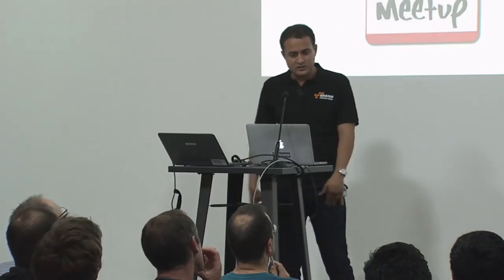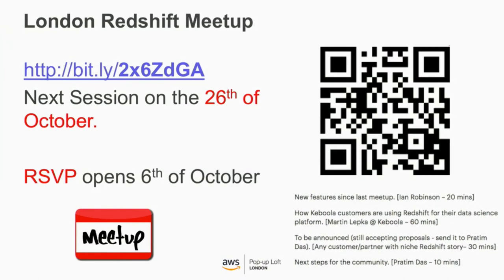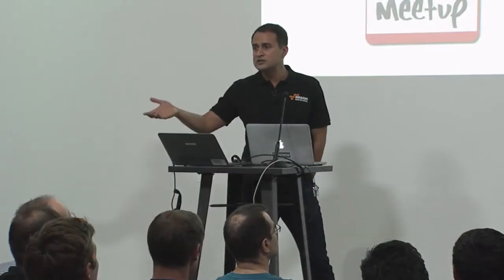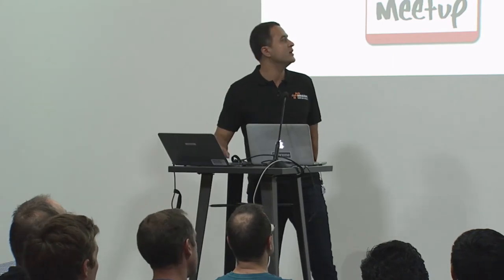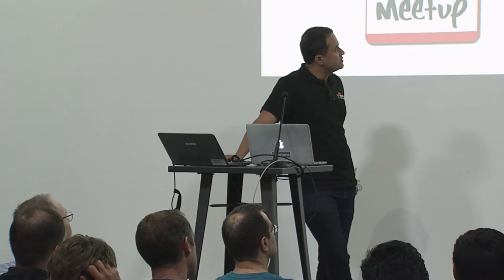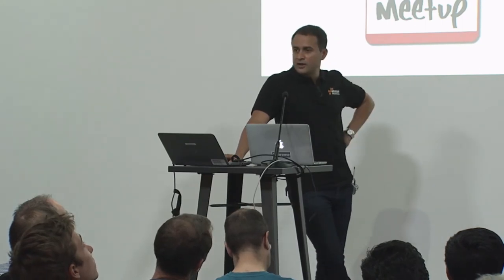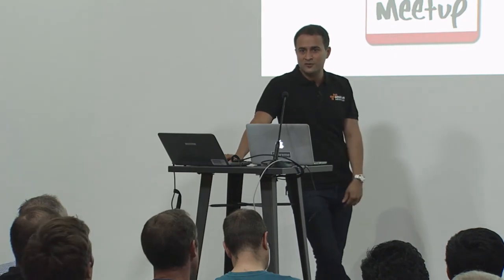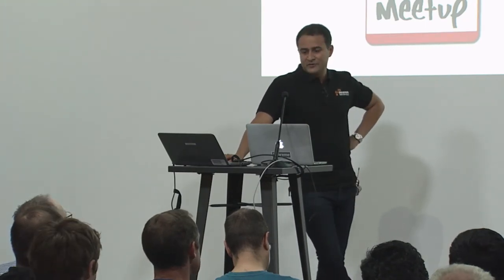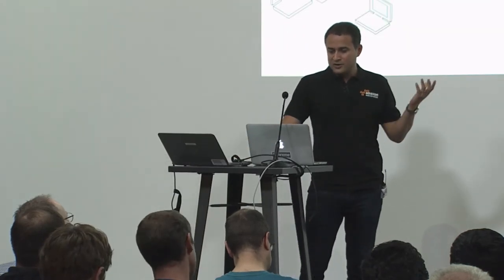I'd like to invite you to join the Redshift meet-up community. The next session is next month, 26th of October. RSVP opens on the 6th of October. We normally have a great set of speakers from customers and partners. Ian Robinson is going to present the first 20 minutes talking about new features since the last meet-up in July. Kibula has also agreed to present about the data science platform they built for their customers. We're still looking for another presenter — if you want to propose a talk, please get in touch. That's pretty much what I wanted to cover — ready to take questions.